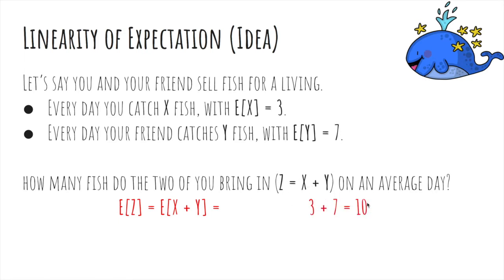Well, you might just say it's 3 plus 7, which is 10, and you would be correct. Because the expected value of x plus y, it turns out we can actually say it's the expected value of x plus the expected value of y.